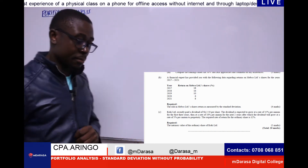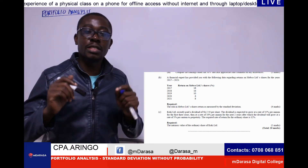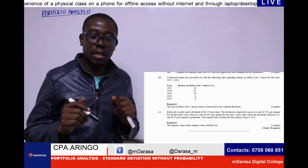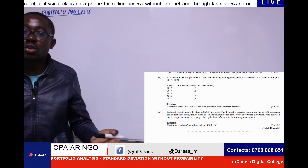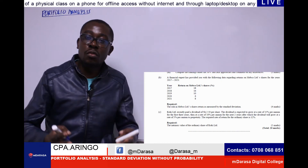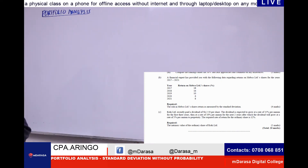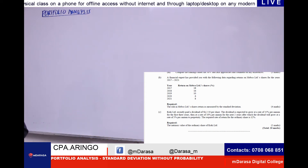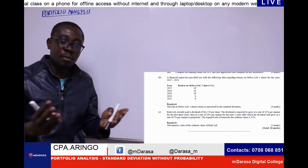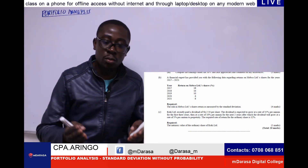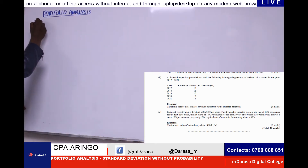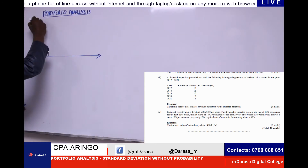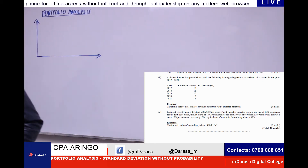Today we are handling portfolio analysis. By now, I know this concept must be at your fingertips. Just a reminder — anytime you're talking about portfolio, what are we looking at? We are looking at a collection of investments. The main objective of having these investments is simply to reduce risk. So the main aim of portfolio formation is risk minimization. Our main aim today is to handle standard deviation without probability.